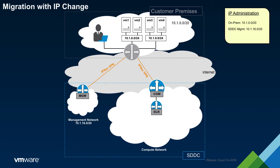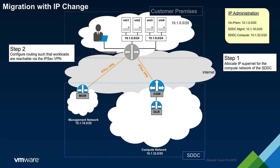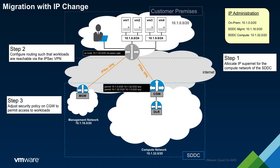As with the previous example, the first step is to allocate an IP range to the compute network of the SDDC. Following that, routing must be configured such that the new IP address range is reachable via the IPsec tunnel to the compute network. The security policy of the CGW must also be configured. Finally, we will create a logical network within the SDDC.